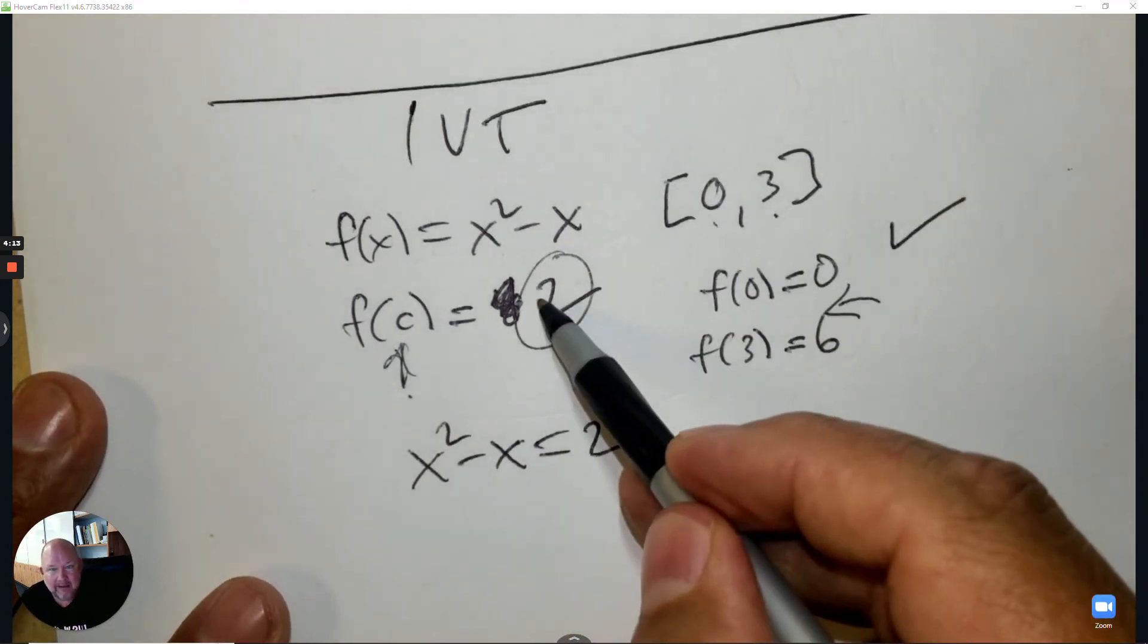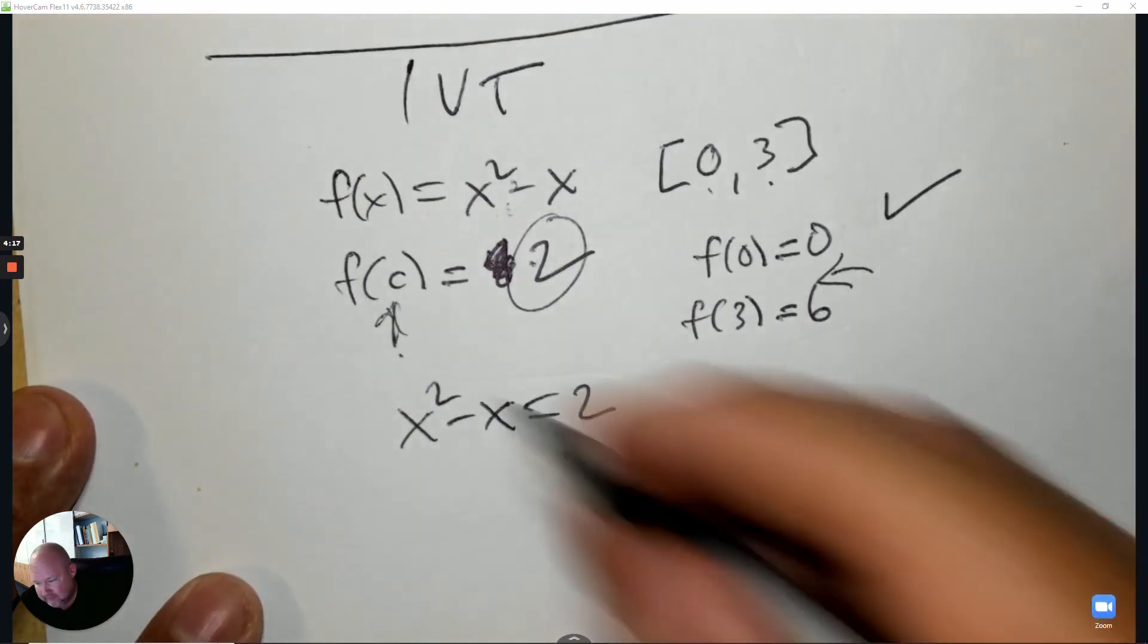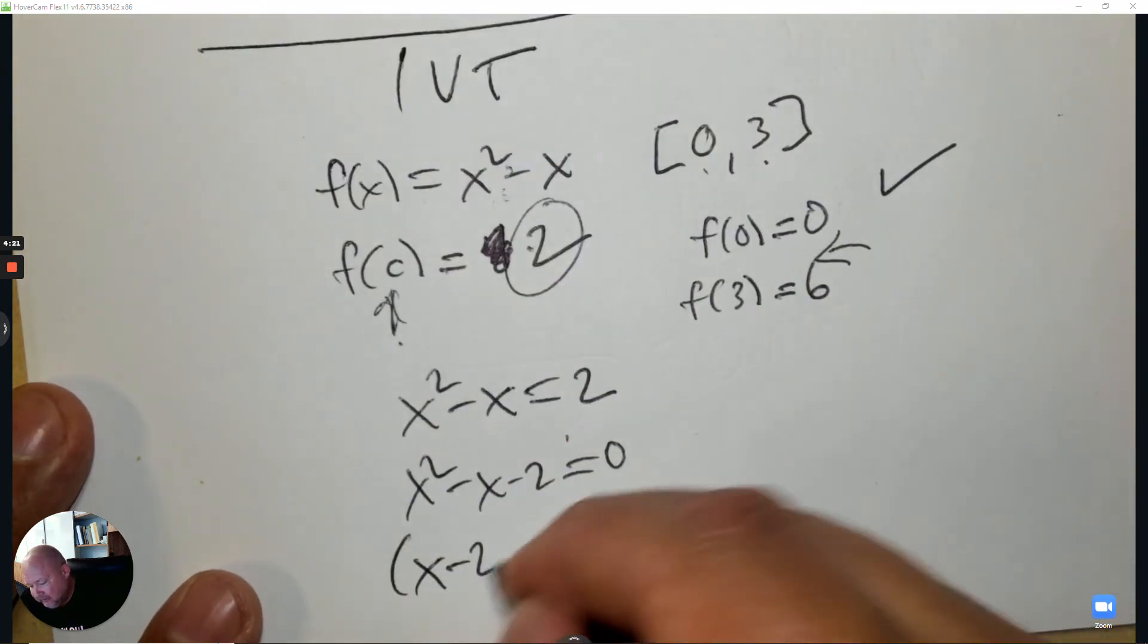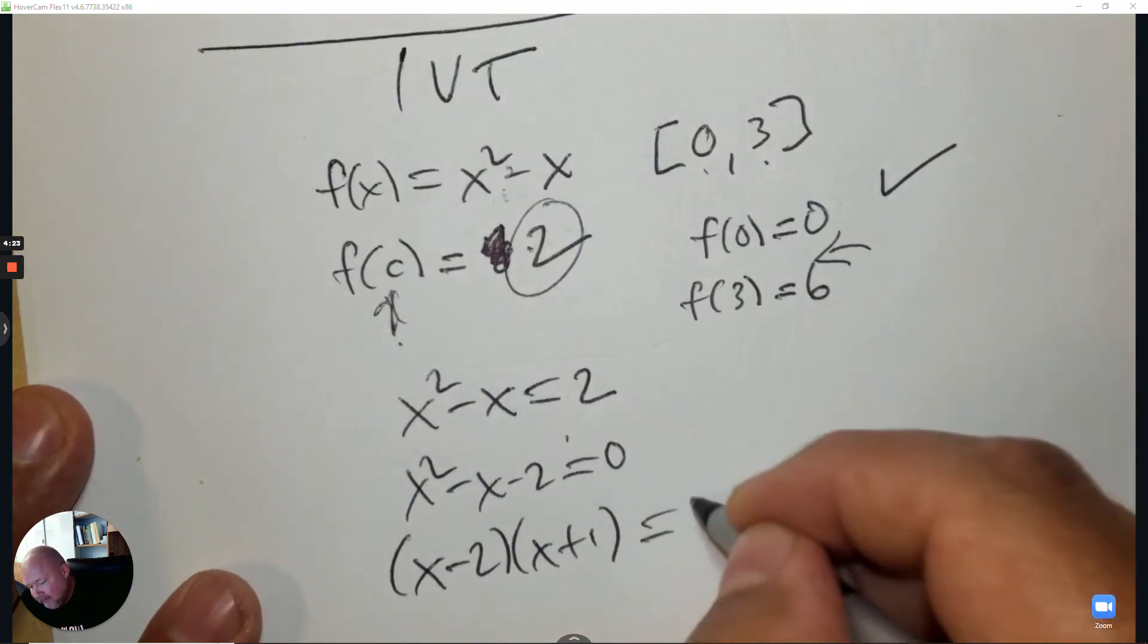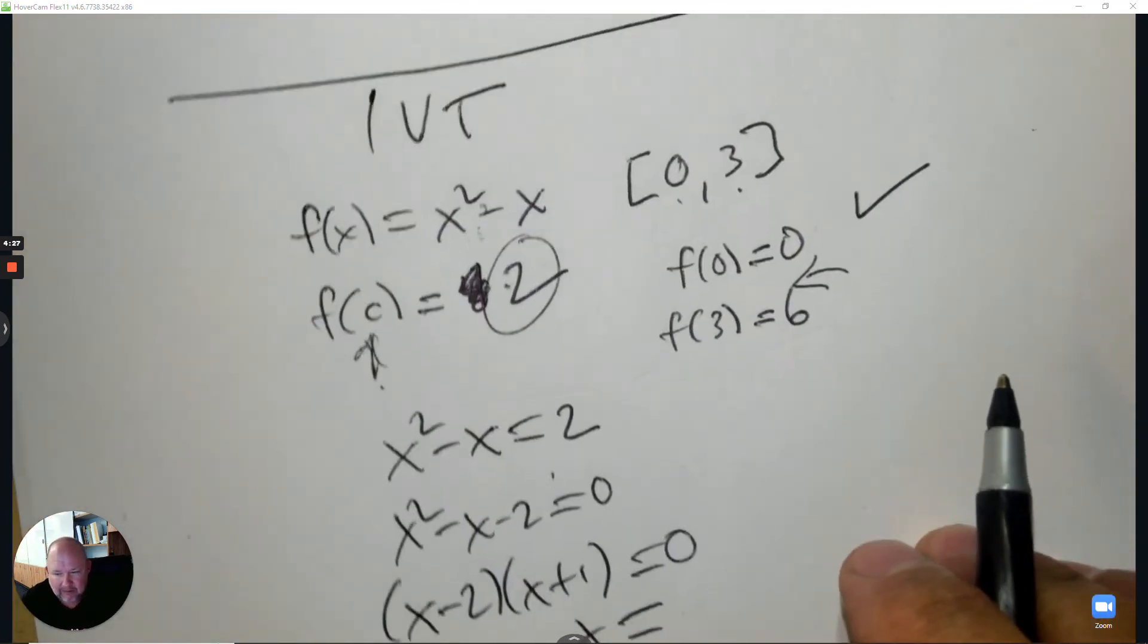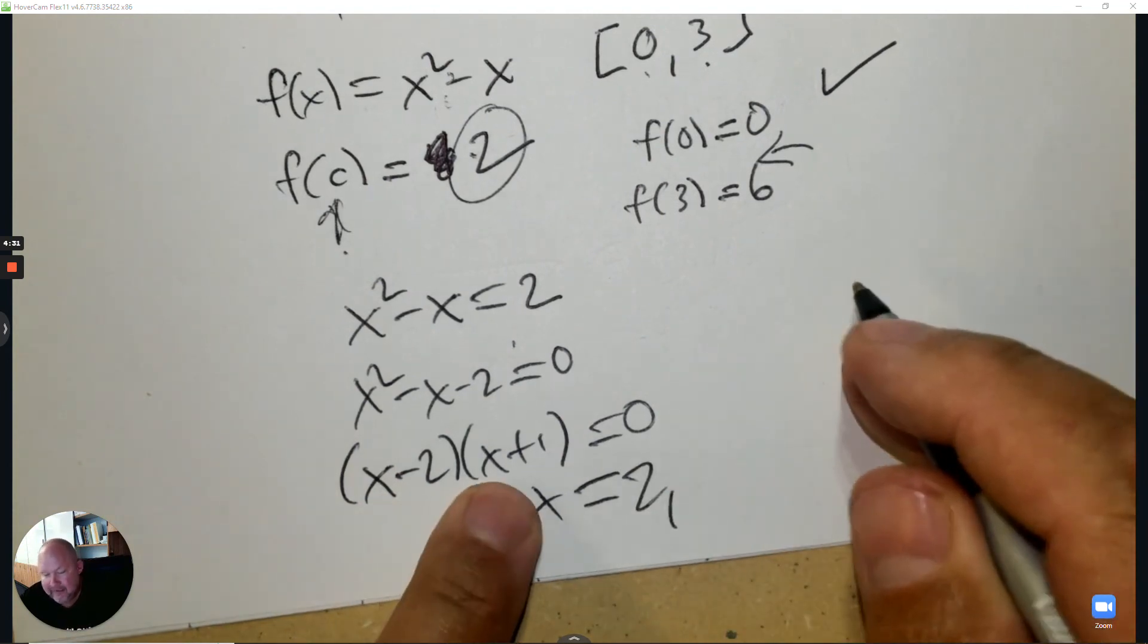Then we take that number and make it equal to this function, then solve it. We subtract 2 and factor. Something to be careful about here. The factoring should be basic. The two answers are positive 2 and negative 1.